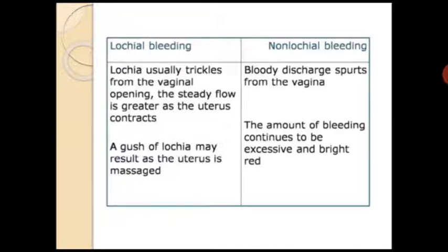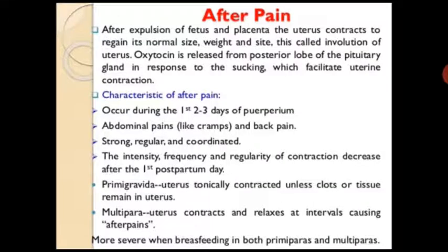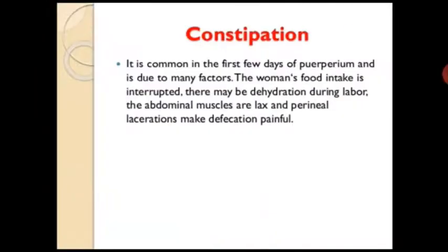A gush of lochia may result when the uterus is massaged; non-lochia bleeding continues to be excessive and bright red. After pains: after expulsion of the fetus and placenta, the uterus contracts to regain its normal size — this is called involution of the uterus. Oxytocin is released from the posterior lobe of the pituitary gland in response to sucking, which facilitates uterine contraction. Characteristics of after pains: they occur during the first two to three days of puerperium, presenting as abdominal cramp-like pain and back pain, with strong, irregular, coordinated contractions whose intensity and frequency decrease after the first postpartum period.